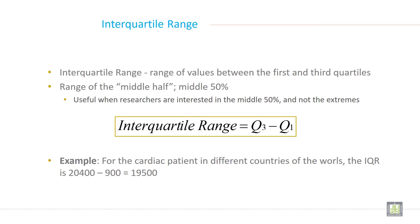So let's start with the IQR, interquartile range. In short, it is called IQR. Interquartile range is a range of value between the first and third quartile, range of the middle half, middle 50 percent. Useful when researchers are interested in the middle 50 percent values and not the extreme.